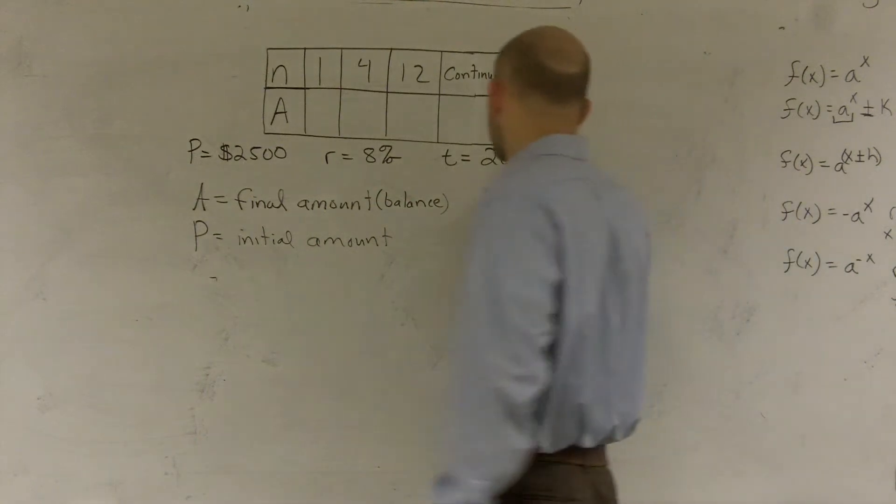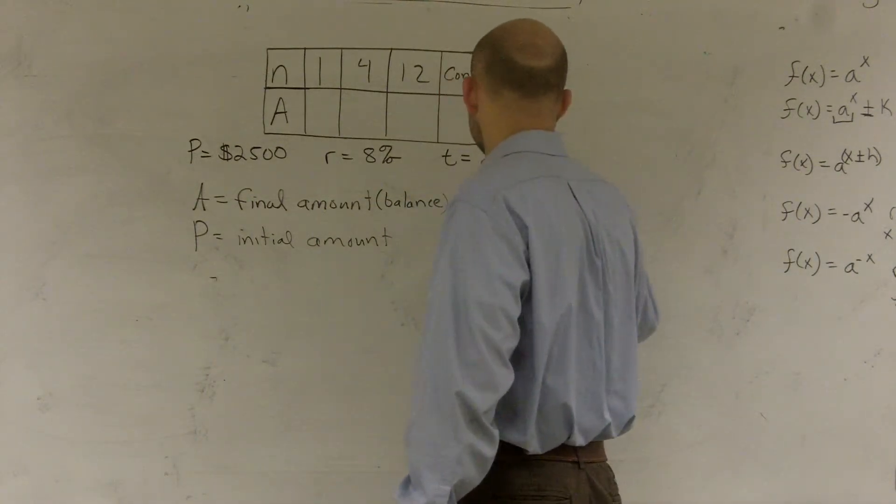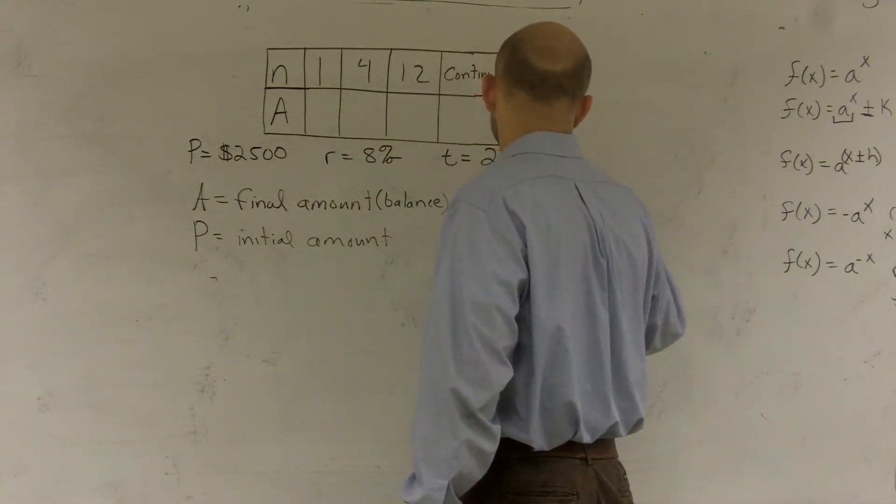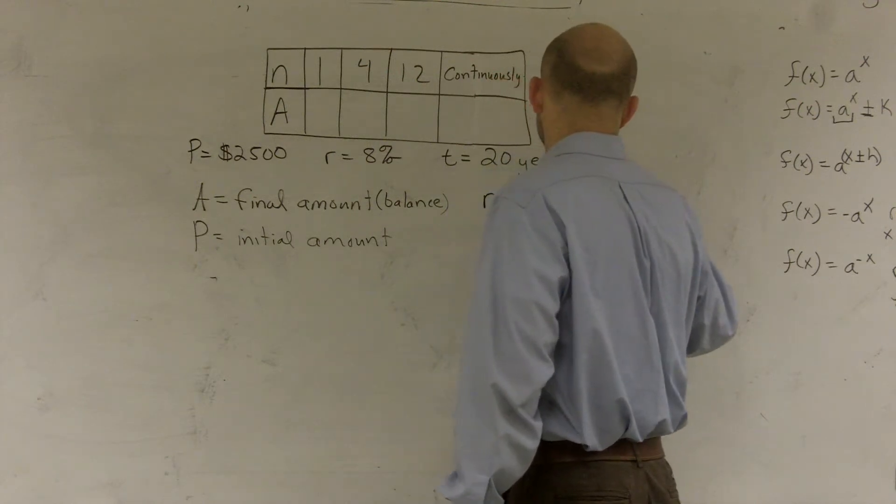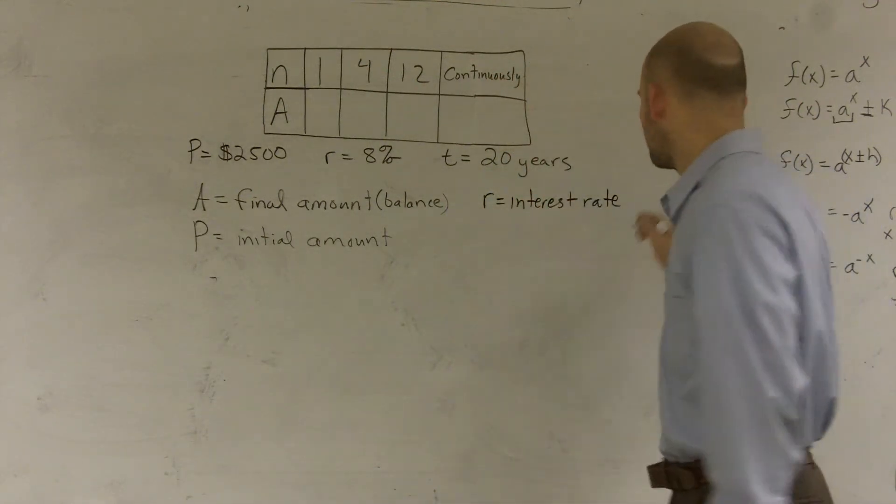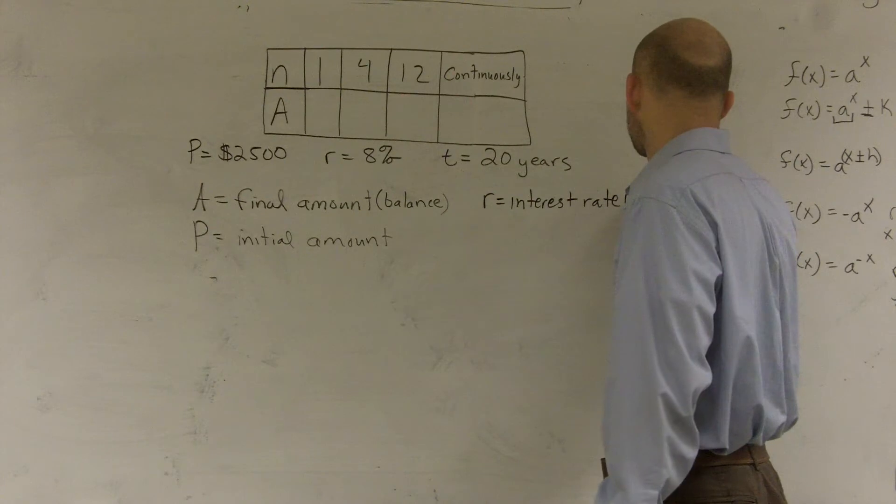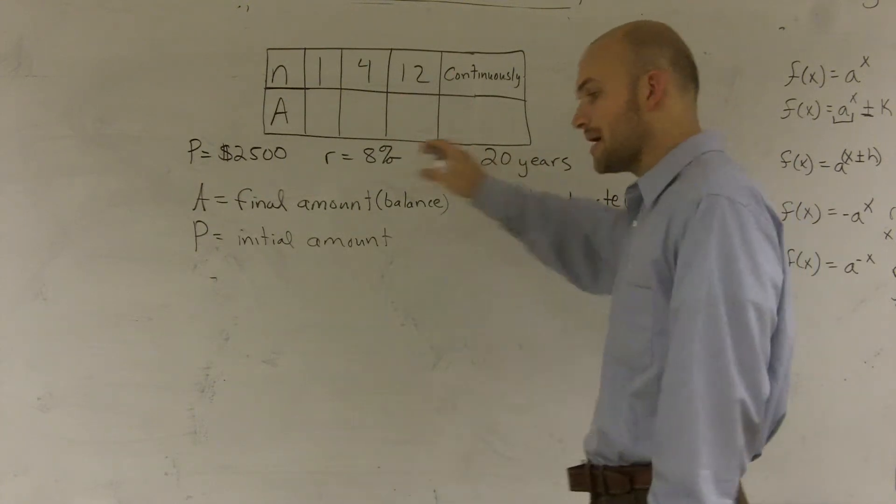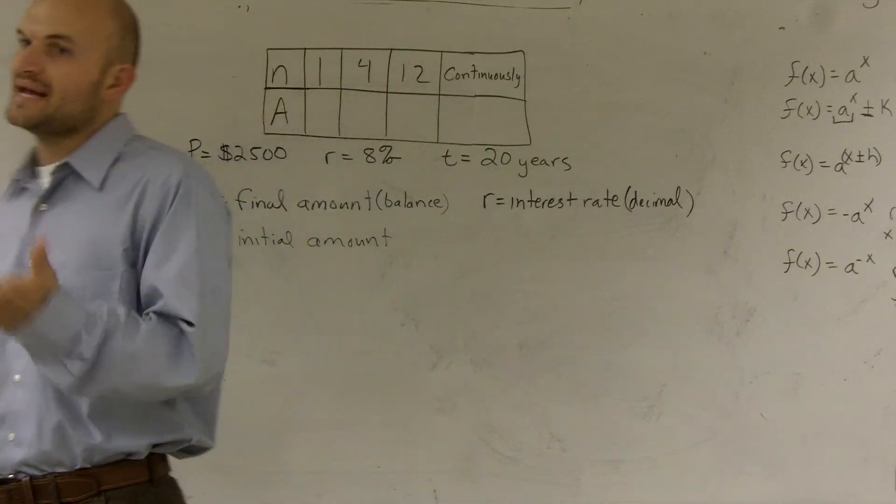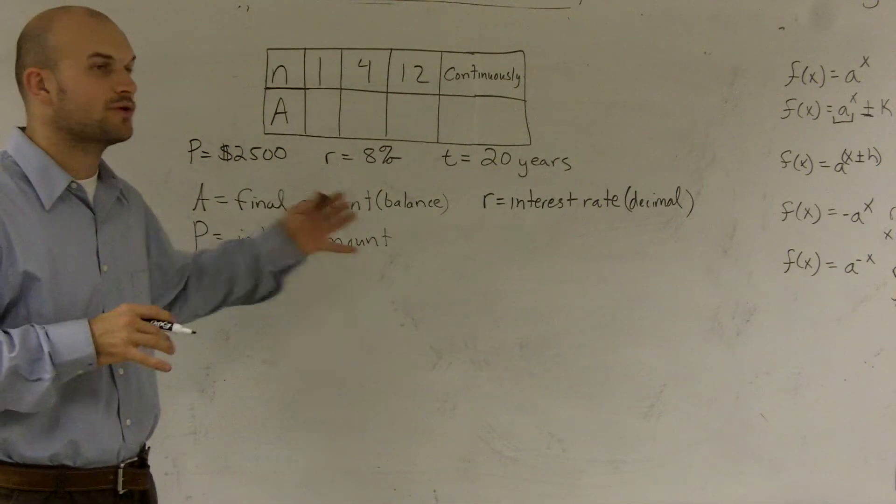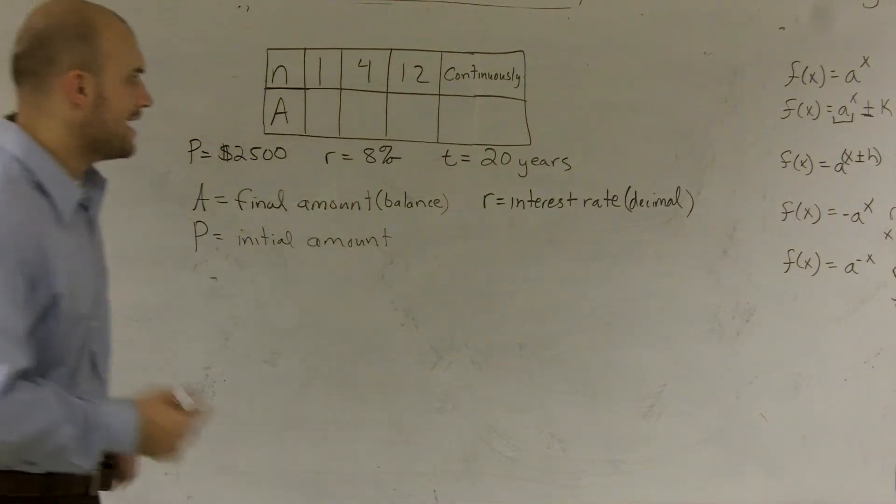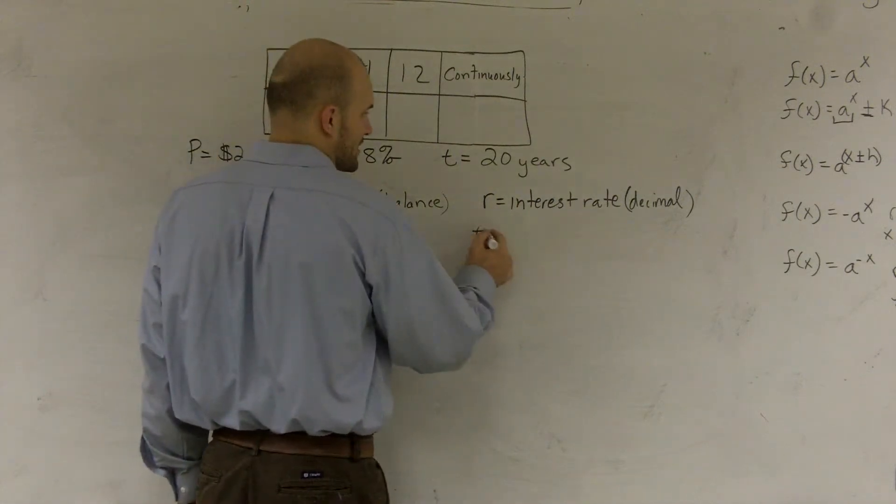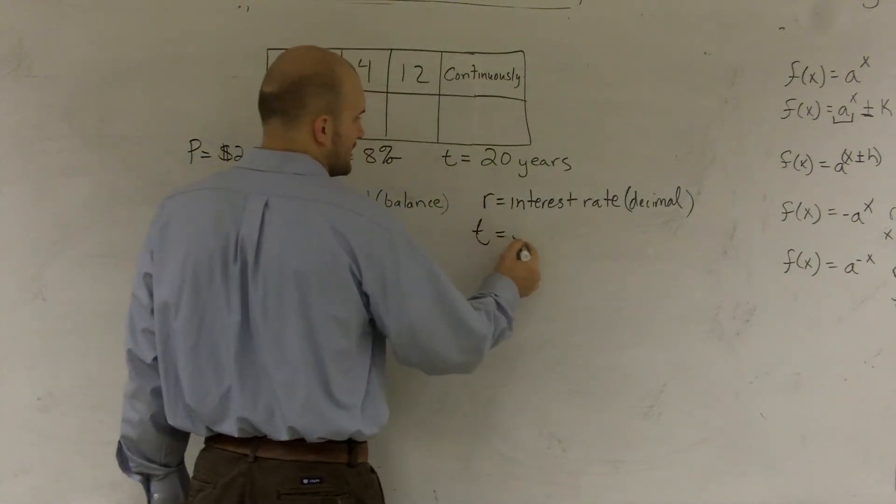Then they have R, which is a percent, which is going to be your interest rate. And one important thing to remember about interest rate or your interest rate is we need to have it in decimal form. All right? So a lot of problems are going to give you the percentage. Make sure when you plug it into the equation, you're putting it in decimal form. And the last thing they say, T equals 20 years.